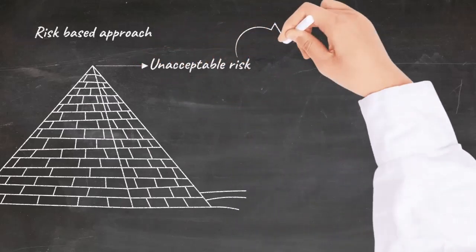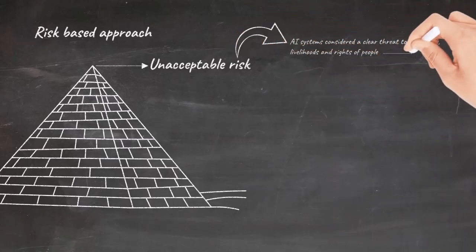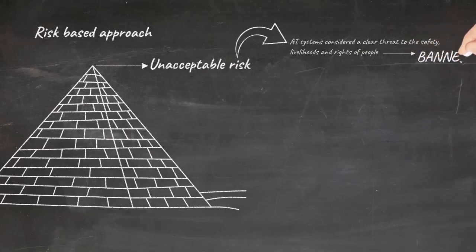AI systems in the unacceptable risk category are systems considered a clear threat to the safety, livelihoods and rights of people. These systems are banned.